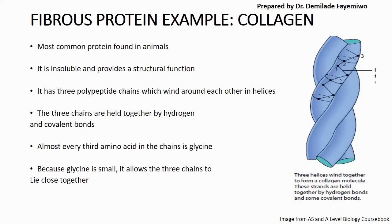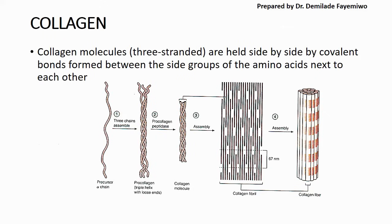The three chains of collagen are held together by hydrogen and covalent bonds. Almost every third amino acid in the chain is glycine — the simplest amino acid — because its small size allows the polypeptide strands to bind tightly together so the helix is not loose but very tight, enhancing its structural function. Collagen molecules are three-stranded and held side by side by covalent bonds between side groups of neighboring amino acids. We usually find collagen within muscle tissue.